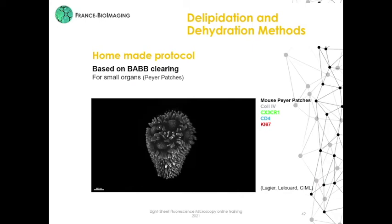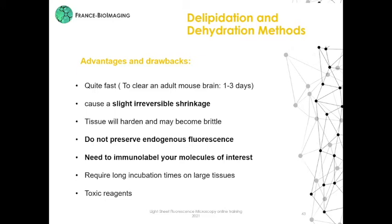To summarize the advantages and the drawbacks of clearing methods based on organic solvents: these methods are quite fast, they cause slight reversible shrinkage, tissue will harden and may become brittle, they do not preserve endogenous fluorescence so you need to immunolabel your molecule of interest, they require longer incubation times for large tissue, and these organic solvents are toxic.